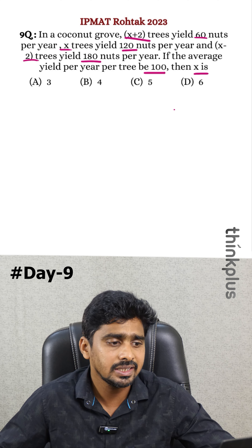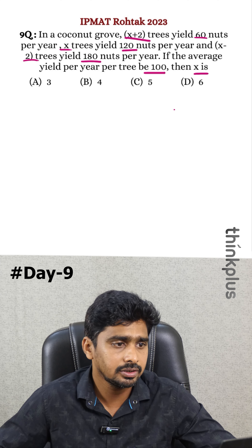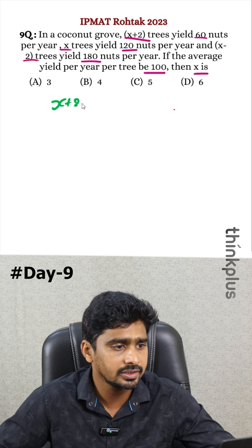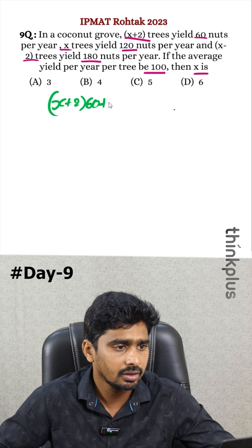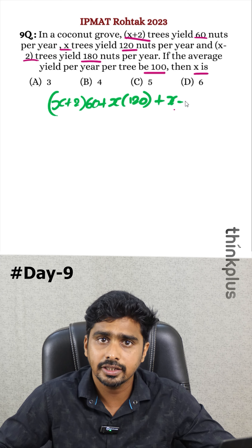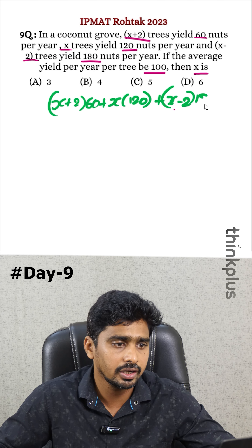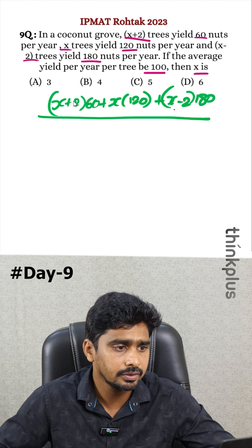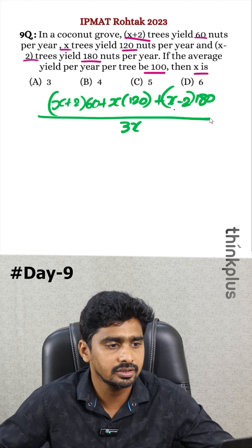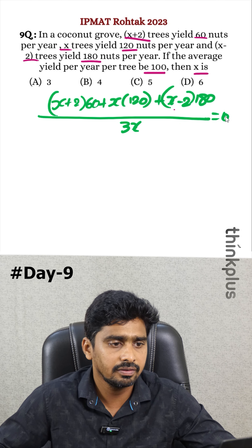This is a basic average question. X plus 2 trees yield 60, so the total is (x+2) × 60. X trees yield 120, so that's x × 120. X minus 2 trees yield 180. The total number of trees is (x+2) + x + (x−2) = 3x. Setting the average equal to 100.